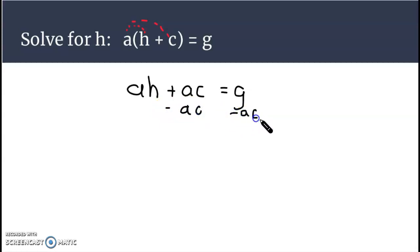Now to isolate h, first thing we're going to do is take away this ac term from both sides. Minus ac on both sides. Remember you can do anything you want to an equation as long as you keep it balanced and do it to both sides.